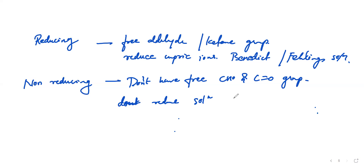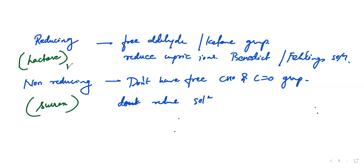A very good example of the reducing sugar is lactose, which is also called milk sugar. Whereas for the non-reducing sugar, it's sucrose — that is your normal table sugar. Lactose is also called milk sugar because it's present highly in milk, whereas sucrose is a cane sugar, the normal table sugar. These are the two types on the basis of whether they have a free aldehyde or ketonic group or not. This is all about carbohydrates.